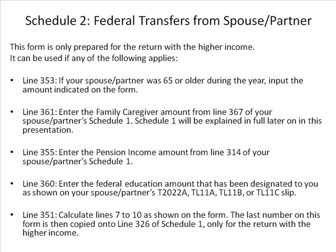Schedule 2 is only prepared for the return with the higher income. Line 353: if your spouse or partner was 65 or older during the year, input the amount indicated on the form. Line 361: enter the family caregiver amount from line 367 of your spouse or partner's Schedule 1. Line 355: enter the pension income amount from line 314 of your spouse or partner's Schedule 1. Line 360: enter the federal education amount designated to you as shown on your spouse or partner's T2022A, TL11A, TL11B, or TL11C slip. Line 351: calculate lines 7 to 10 as shown on the form. The last number on this form is then copied onto line 326 of Schedule 1, only for the return with the higher income.